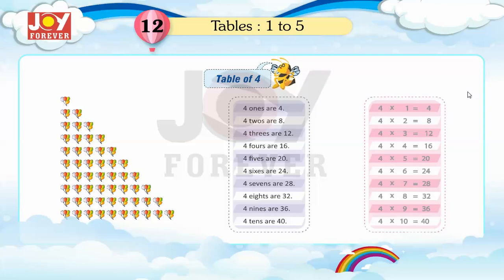4 twos are 8, 4 threes are 12, 4 fours are 16, 4 fives are 20, 4 sixes are 24.